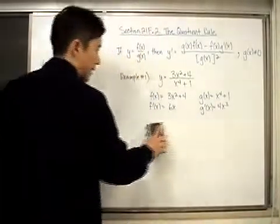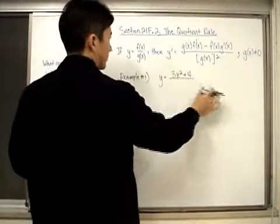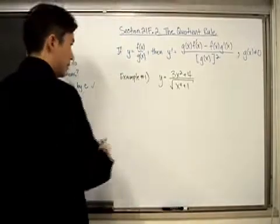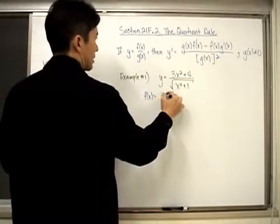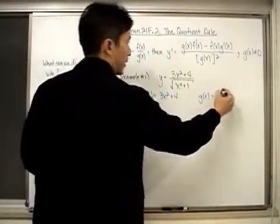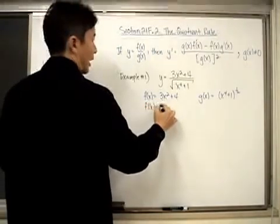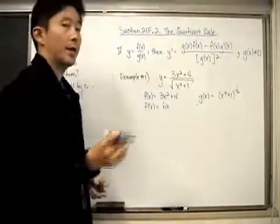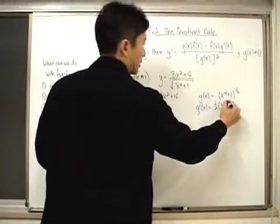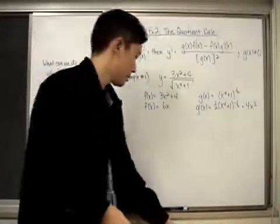Now let's take a look at the second example. The problem changes slightly — all I'm going to do is put a square root around x⁴ + 1. So f(x) is still 3x² + 4, but g(x) is now the square root of (x⁴ + 1), which is the same as (x⁴ + 1) raised to the one-half power. f'(x) is still 6x, but for g'(x) I have to use the chain rule because I have a composition of two functions. So g'(x) is going to be one-half times (x⁴ + 1) to the negative one-half, times 4x³.